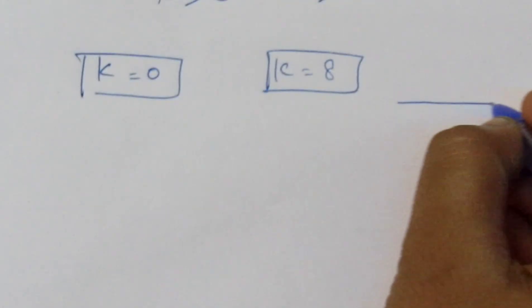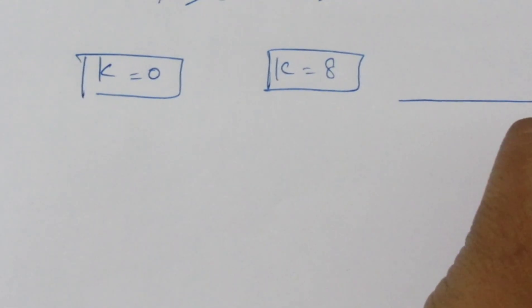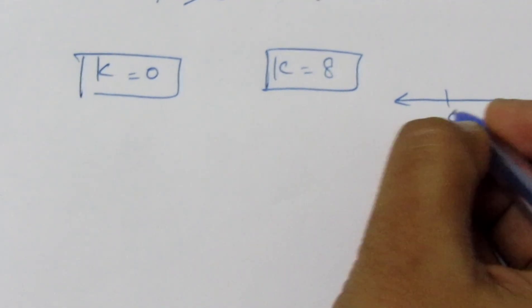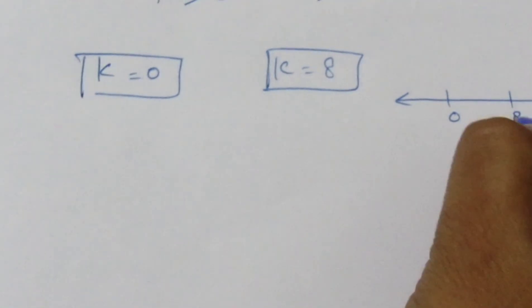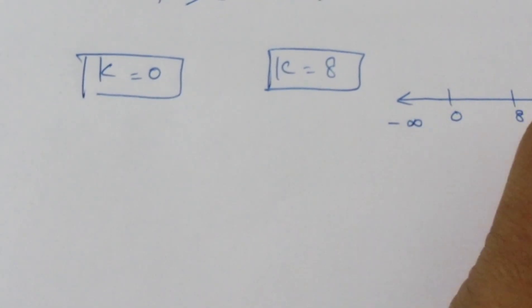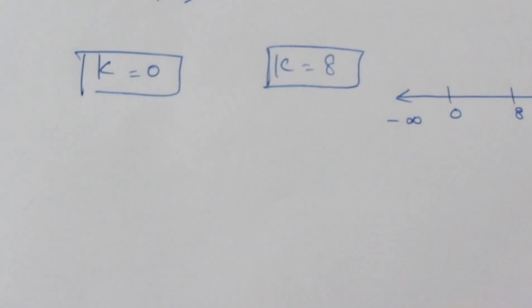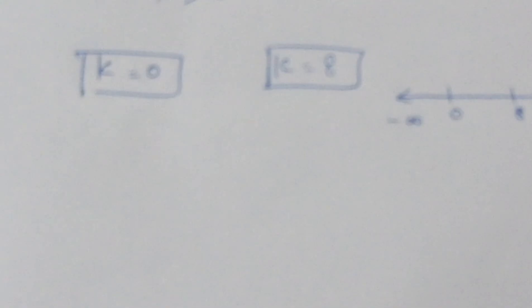Roots are real and equal at these values. Now on the number line, we mark 0 and 8. Looking from minus infinity to plus infinity, we discuss the nature of the roots for k real across the different intervals.